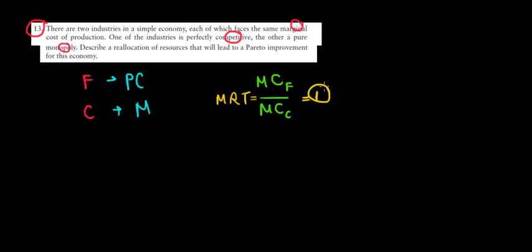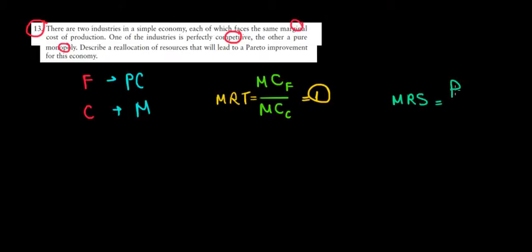What do we need to have equilibrium in the economy? We need this equation with the MRS. The MRS for the consumers — in equilibrium, the MRS must have the same ratio, which means the ratio of prices: the price of food relative to the price of clothing must also equal one.